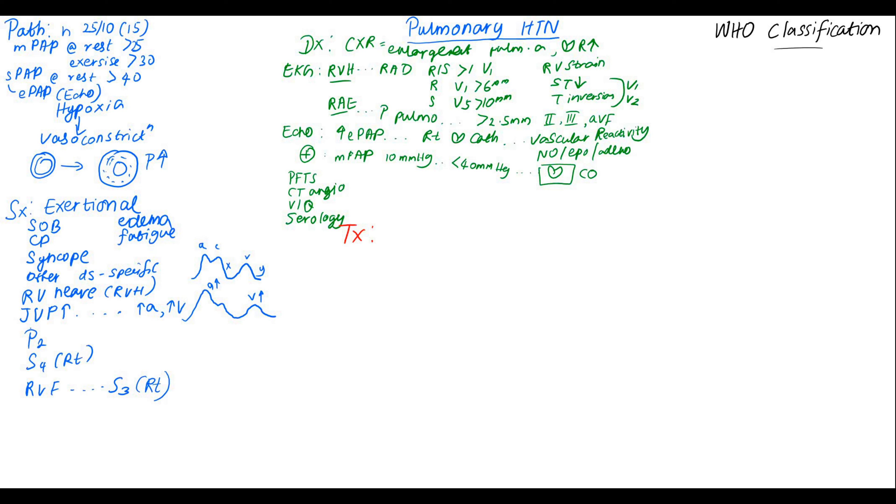Treatment for pulmonary hypertension is disease specific. However, all the patients can benefit from oxygen therapy, exercise, and may be from anticoagulation depending on the etiology. Pulmonary hypertension specific agents can be used to control the pulmonary arterial hypertension and these include phosphodiesterase inhibitors, endothelin receptor antagonists, cyclic GMP enhancers, and also calcium channel blockers.